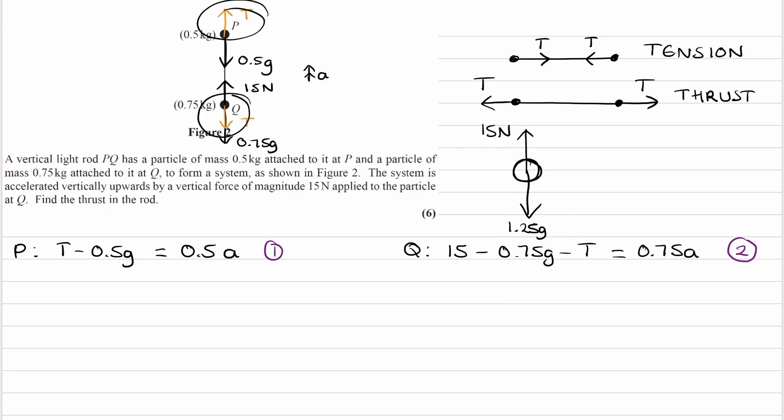The thrust forces are internal forces. An external object is not exerting this force on our system. The 50 Newton force is an example of an external force—something is pushing Q up. Similarly, the weight force is also external—the earth is pulling down on this object. But the thrust forces are internal. It's the rod that exerts those forces on P and Q, and the rod is part of this single object, so we can ignore them. Internal forces always cancel out. It's only the external forces we need to worry about: 50 Newtons upward and 1.25g downward.